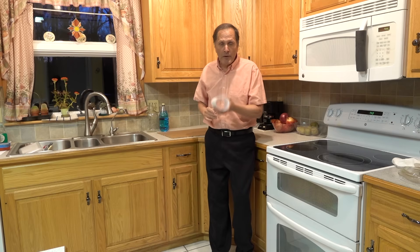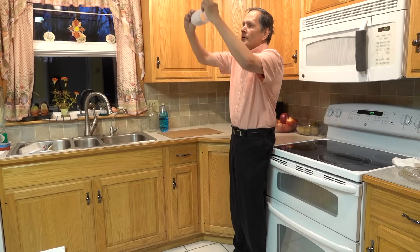Now if you want to try a simple demonstration of the Magnus effect at home, all you need to do is take a piece of paper and roll it up into a cylinder and tape it so that it holds it in place. Now if I drop this, it simply falls straight down.